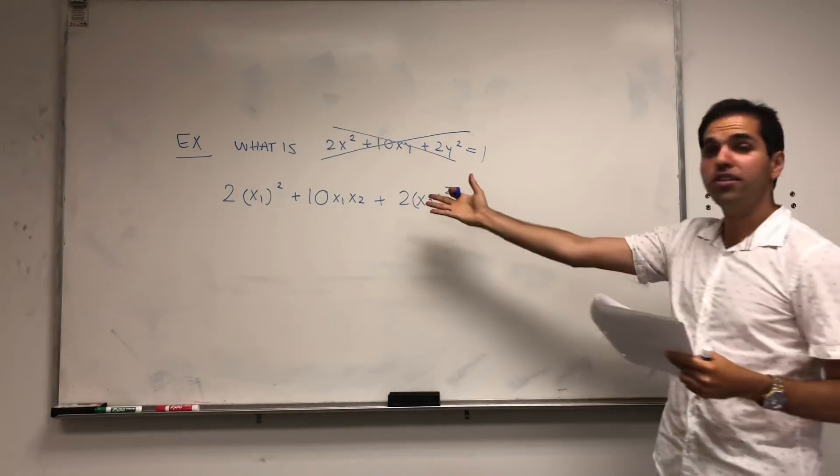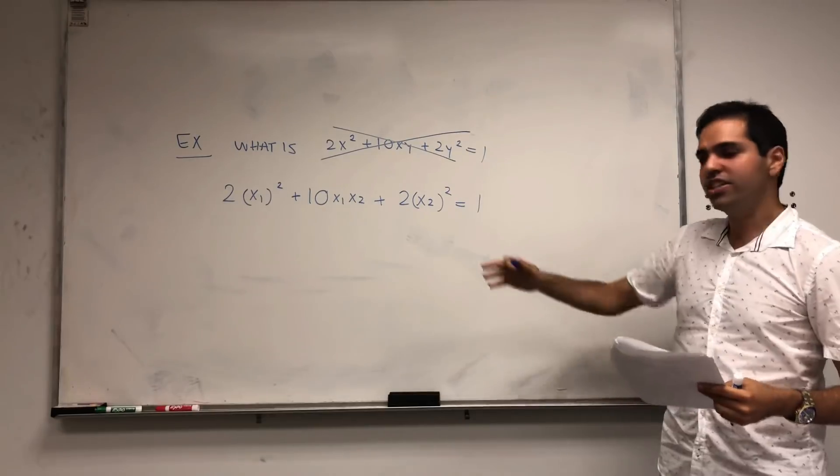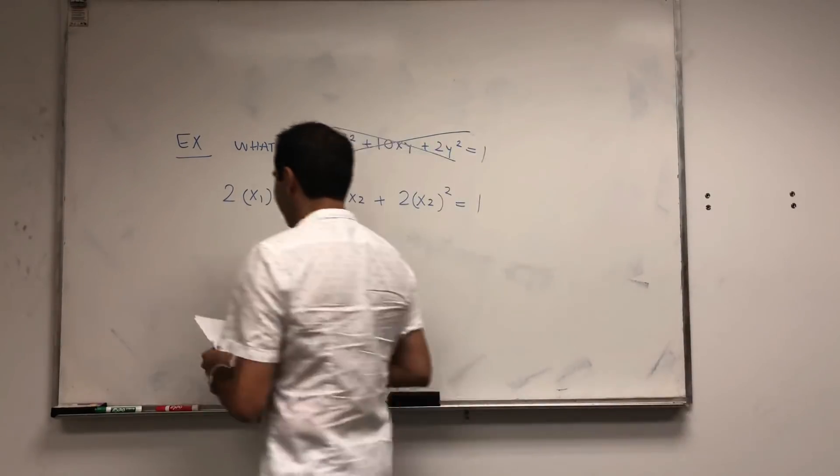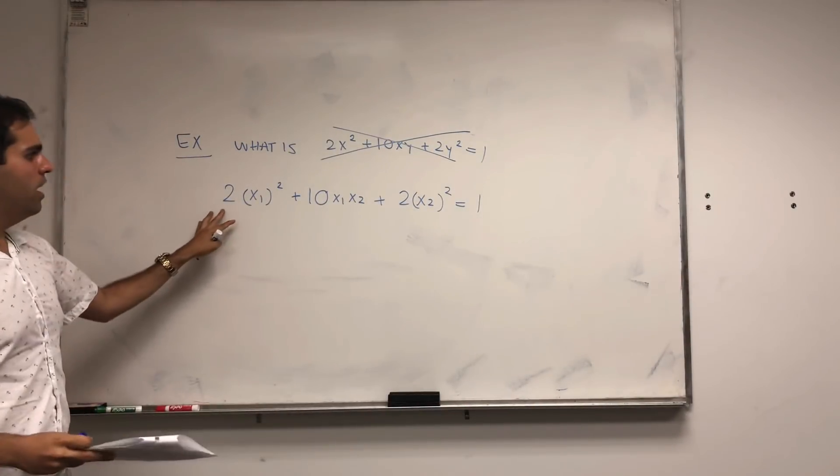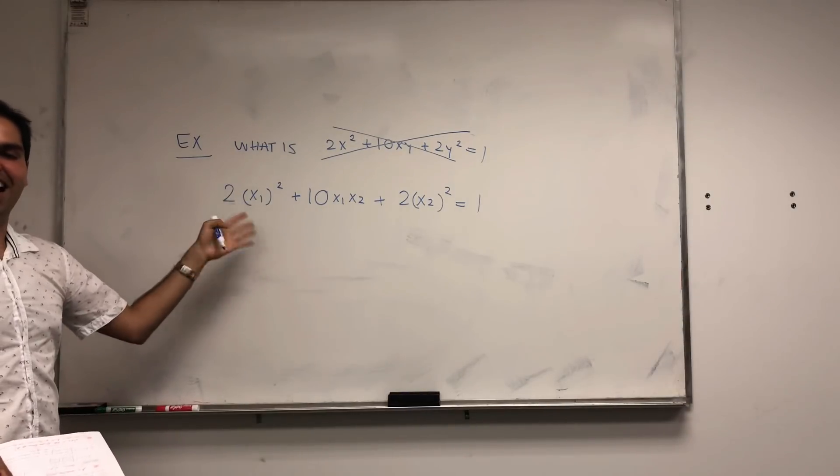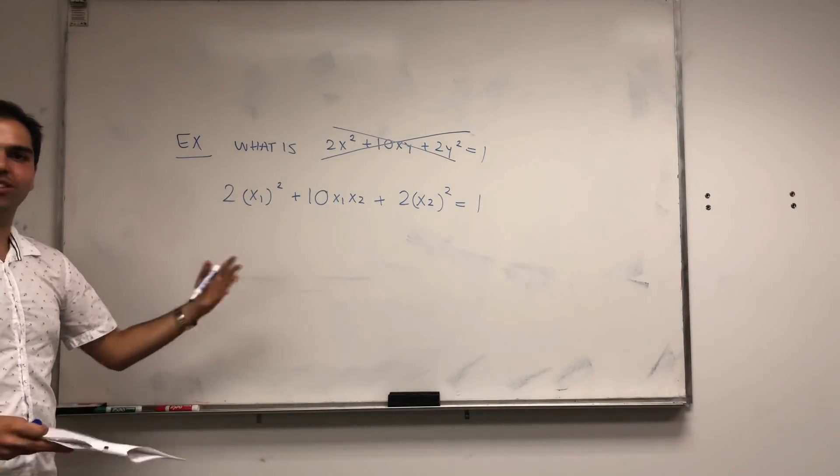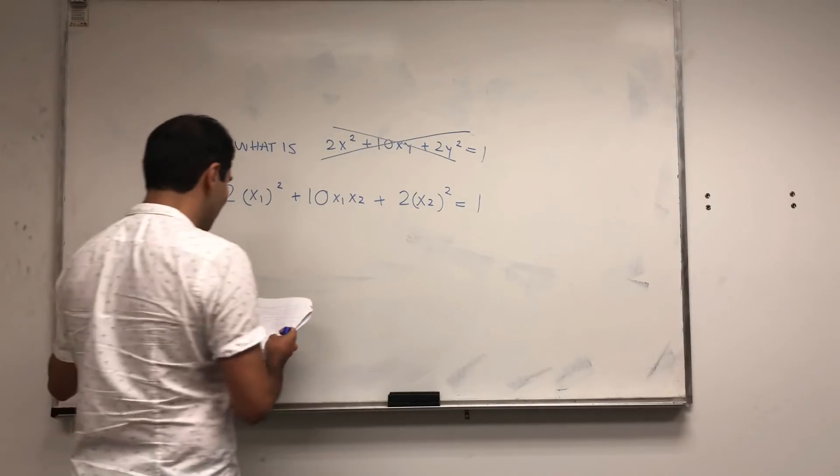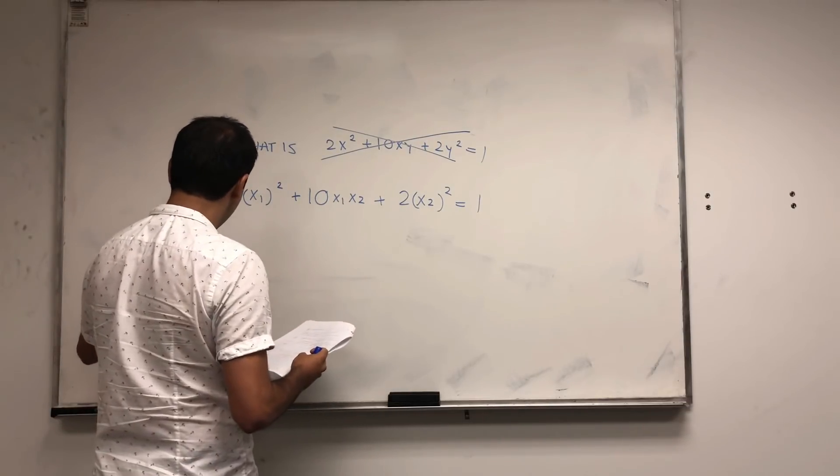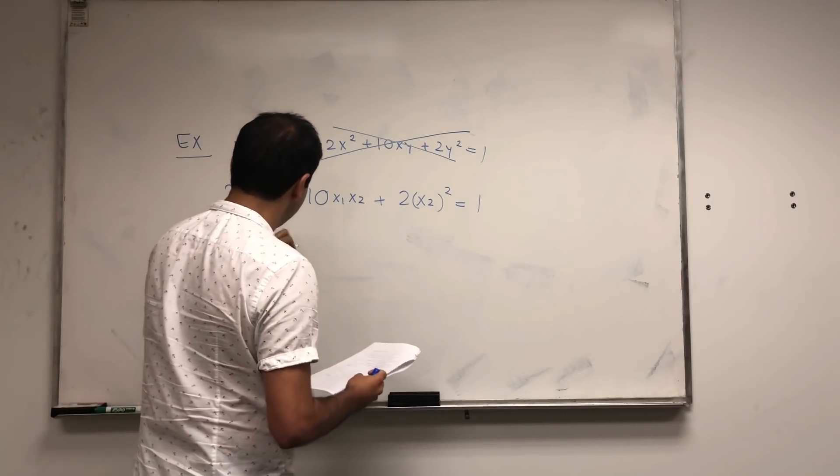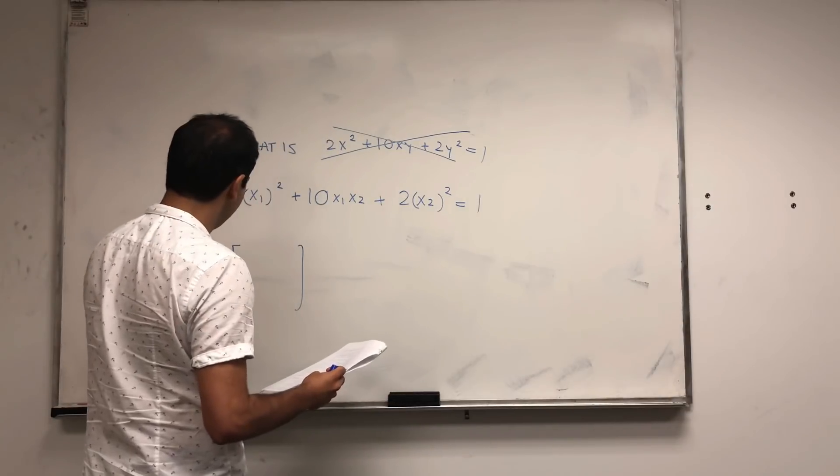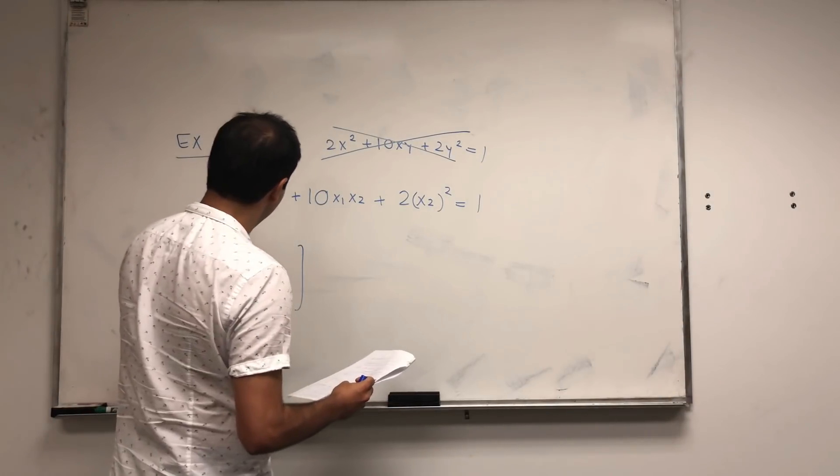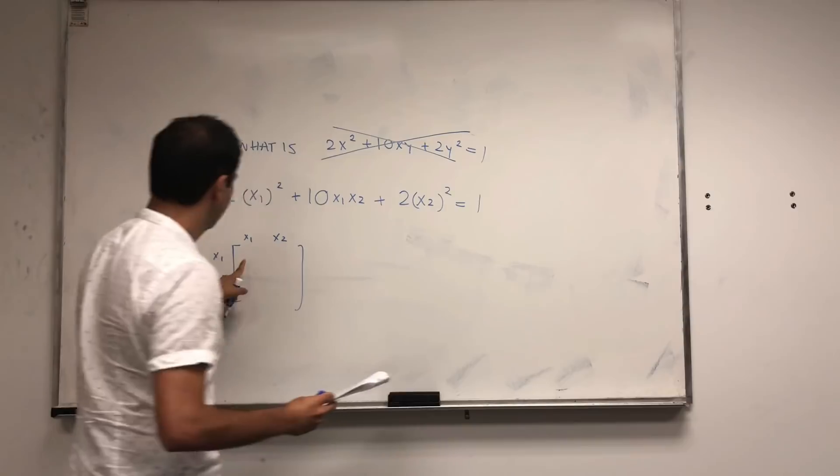And let's focus on the left-hand side, which is called a quadratic form. And the nice thing is, in linear algebra, you can actually write quadratic forms in terms of matrices. So let A be the following matrix.